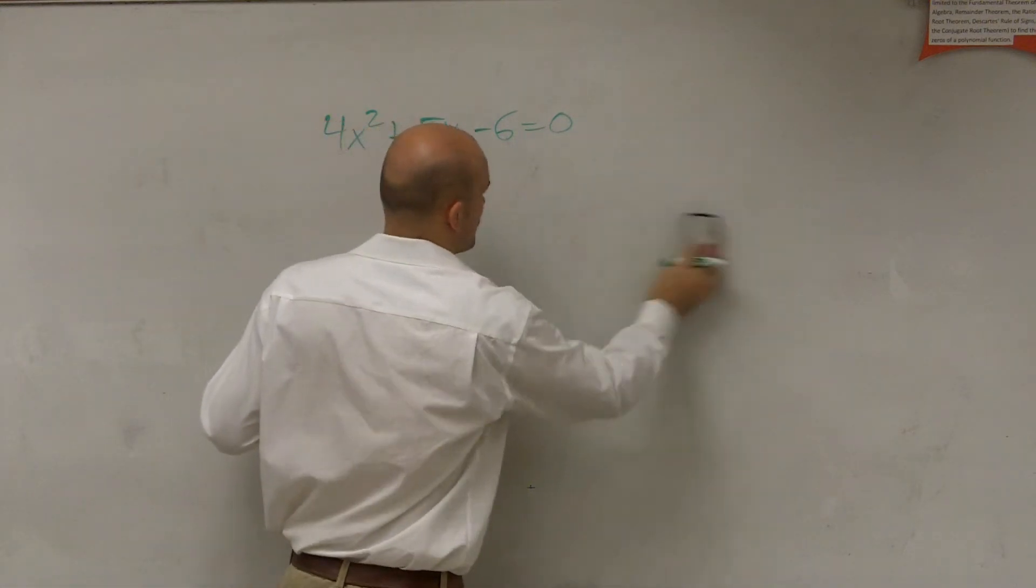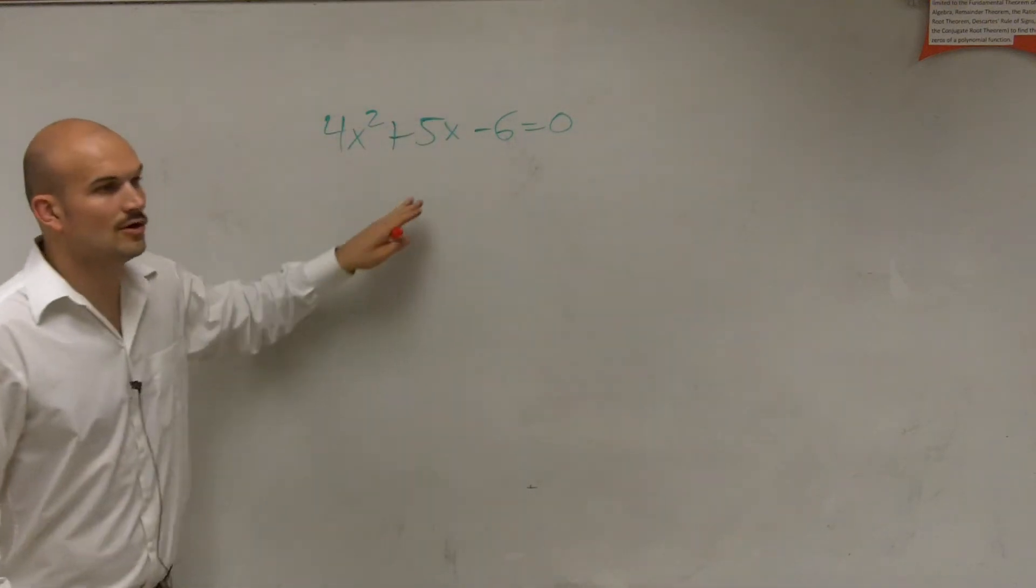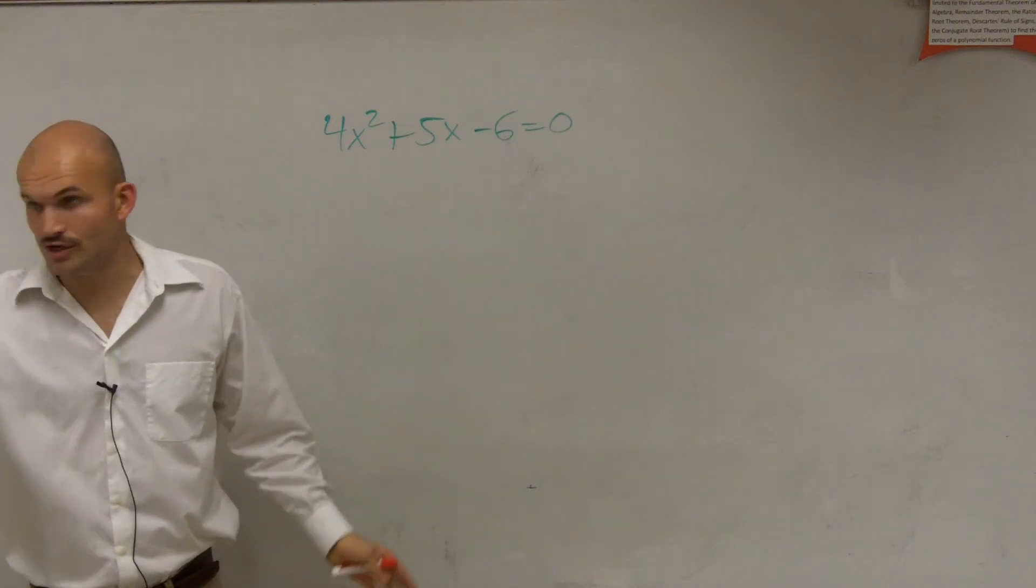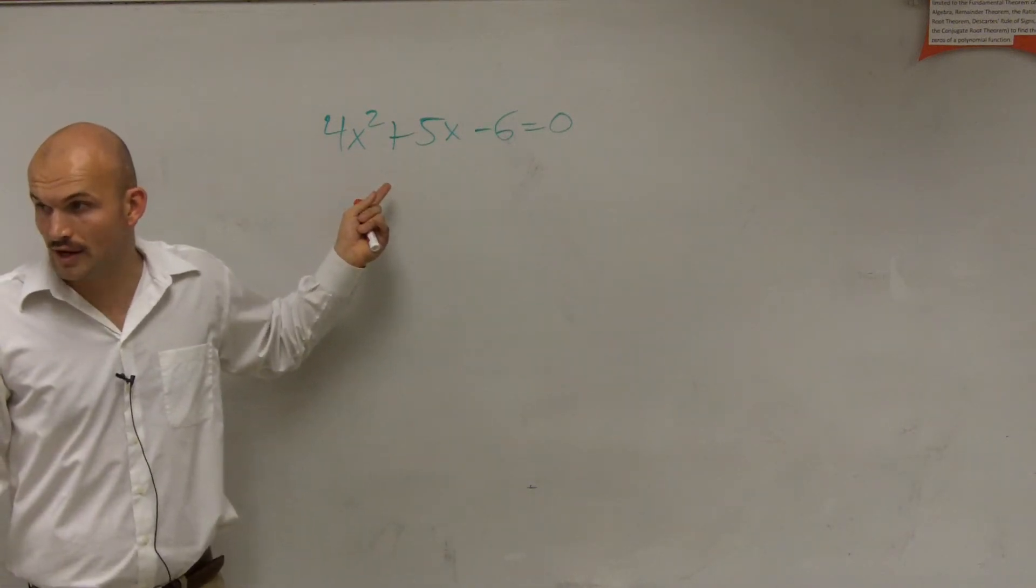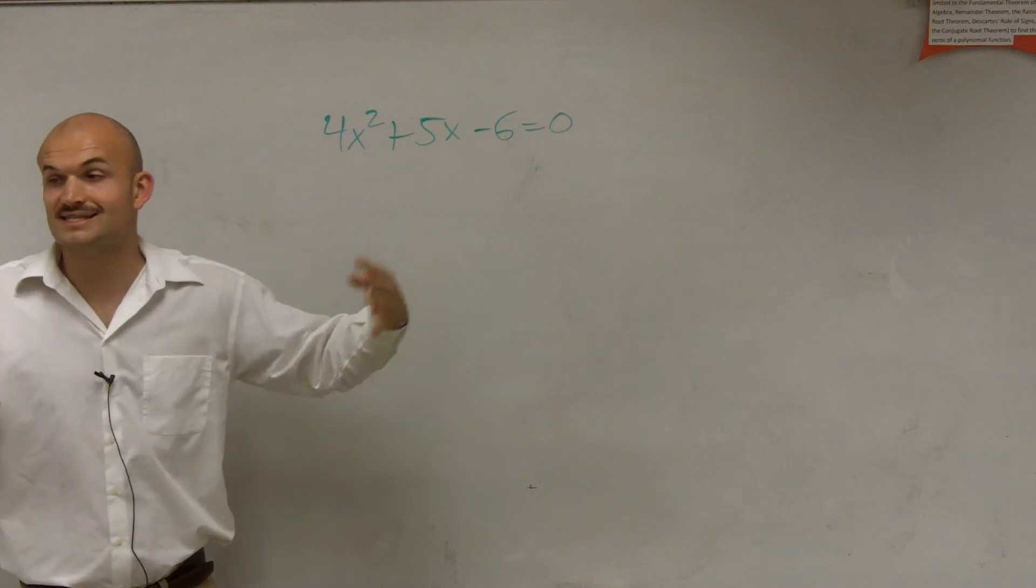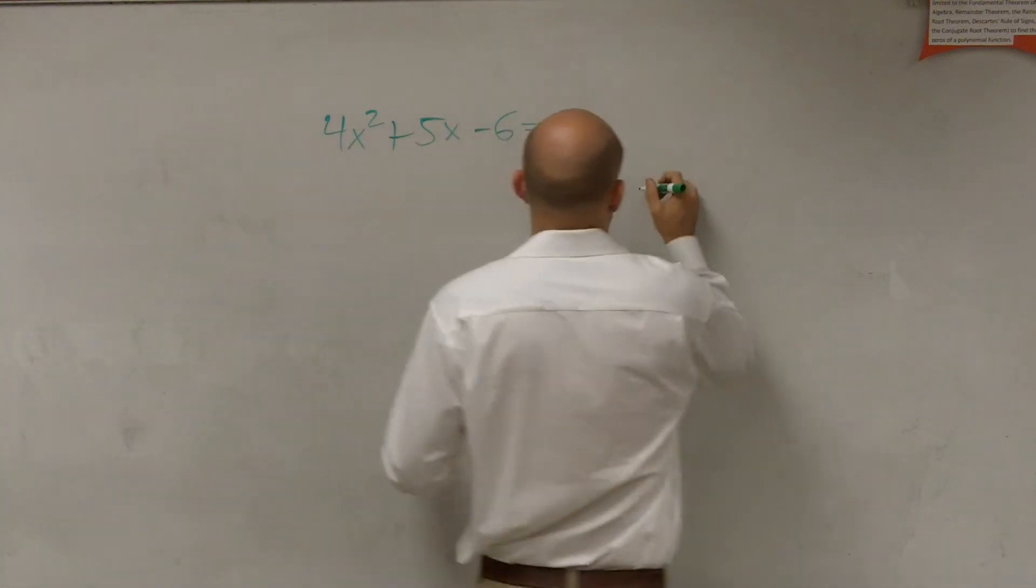Then we'll use the zero product property, which I'll re-explain. So first thing I want to do is factor it. And what I noticed was my a is greater than 1. So therefore, I know I'm going to have to do an extended factoring technique. But I'll try to work through it a little bit quicker.